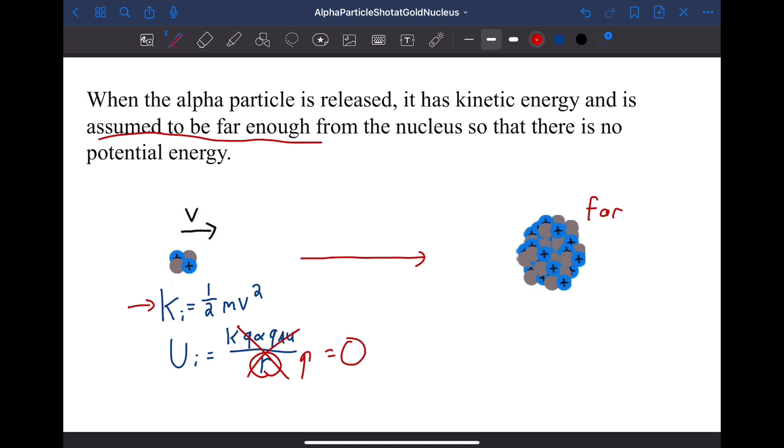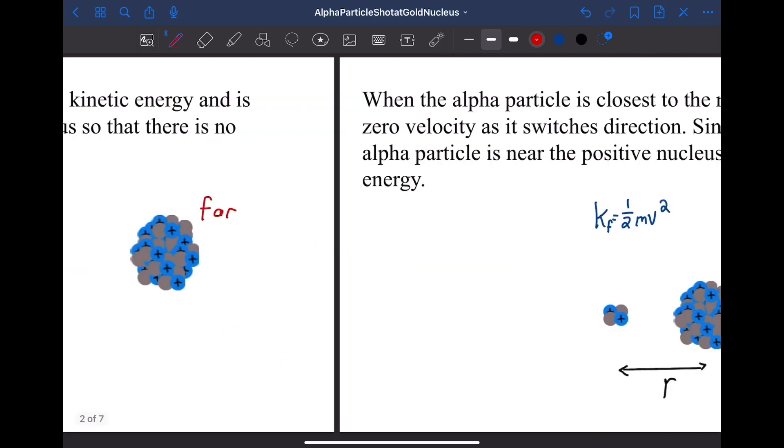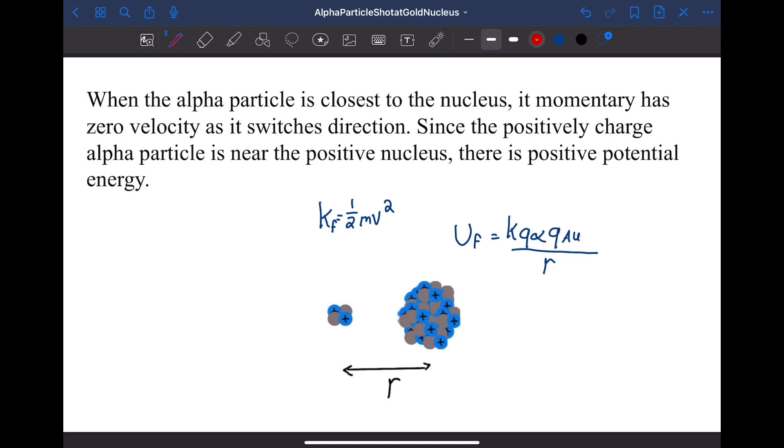As it approaches the nucleus, it's going to convert the kinetic energy it started with into electric potential energy. As the alpha particle gets closer and is deflected by the gold nucleus, it'll slow down. At its closest approach, it's going to have zero velocity and therefore zero kinetic energy.